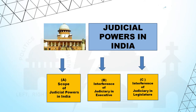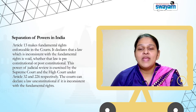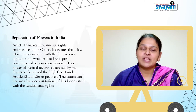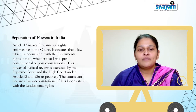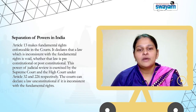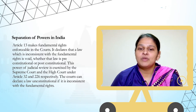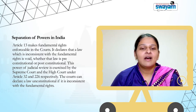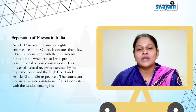Separation of powers in India — the third organ, that is, judicial powers in India. Judicial powers in India has to be studied from three dimensions. The first is the scope of judicial powers in India. Article 13 makes fundamental rights enforceable in the courts. It declares that a law which is inconsistent with the fundamental rights is void, whether that law is pre-constitutional or post-constitutional. This power of judicial review is exercised by the Supreme Court and the High Court under Articles 32 and 226 respectively.